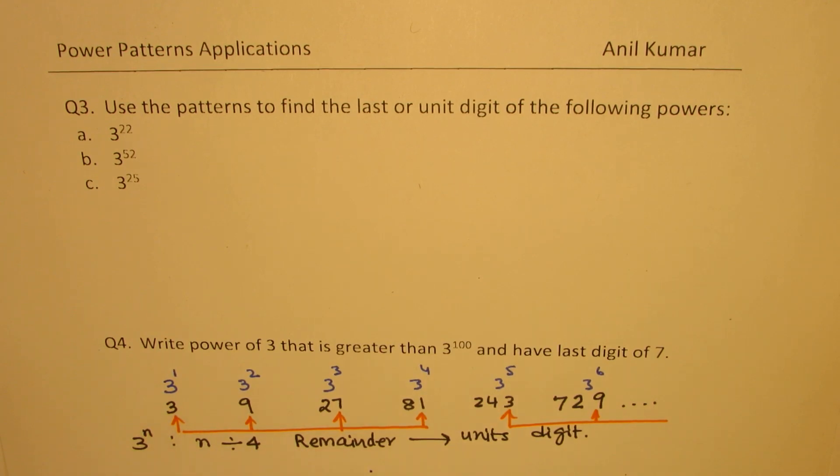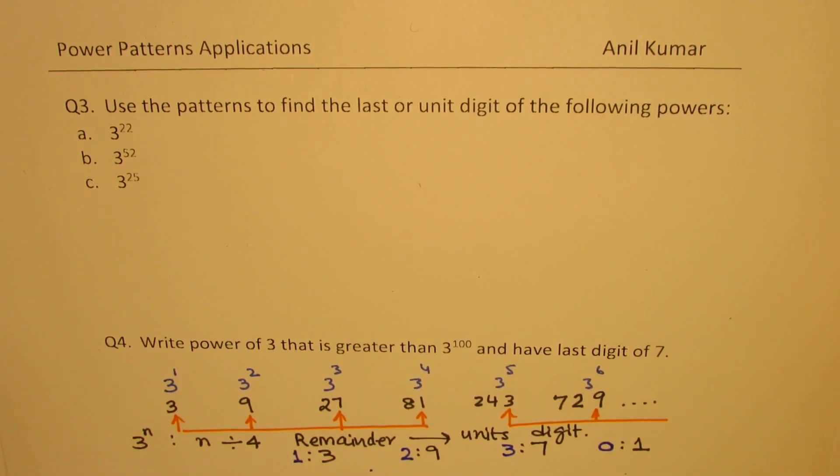So, basically, we can now write the rule. If the remainder could be 1, it could be 2, it could be 3, or it could be 0. You could have written 0 in the beginning also, but we are just following this pattern. So, if it is 1, the unit's place will be 3. If it is 2, unit's place will be 9. If it is 3, it will be 7. And if the remainder is 0, then it is going to be 1. Like, 3 to the power of 0 is 1. Does it make sense to you?